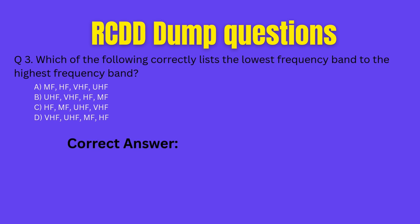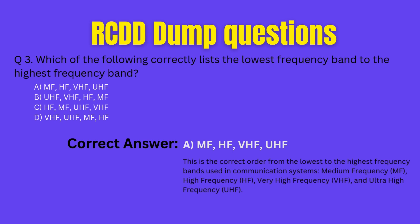Correct answer: A. MF, HF, VHF, UHF. Explanation: this is the correct order from the lowest to the highest frequency bands used in communication systems — Medium Frequency (MF), High Frequency (HF), Very High Frequency (VHF), and Ultra High Frequency (UHF).